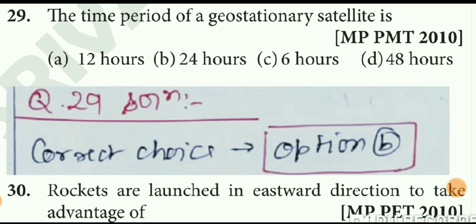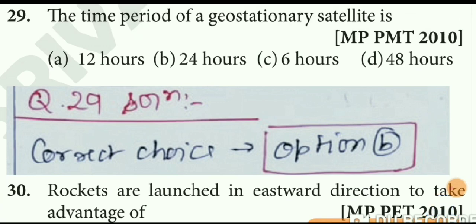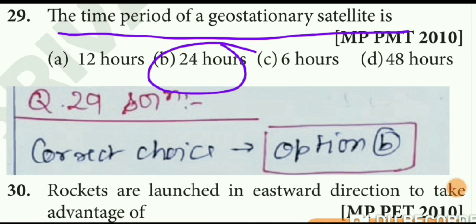Question number 29: what is the time period of a geostationary satellite? A geostationary satellite's time period equals Earth's own rotation period, which is one day or 24 hours. Therefore correct option is B.